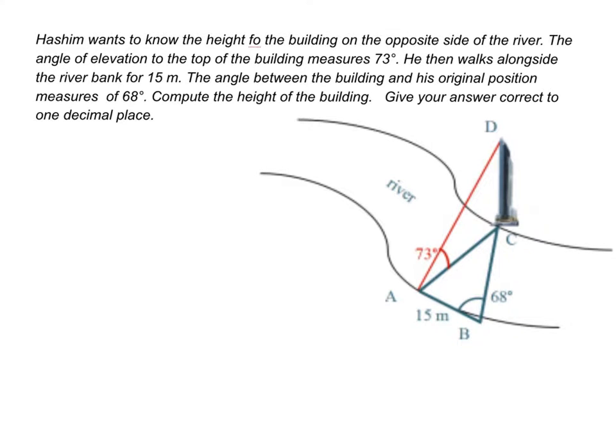Hashim wants to know the height of the building on the opposite side of the river. The angle of elevation to the top of the building measures 73 degrees. He then walks alongside the river bank for 15 meters. The angle between the building and his original position measures 68 degrees. Compute the height of the building. Give your answer correct to one decimal place.